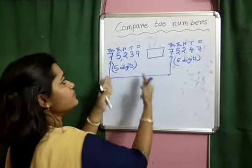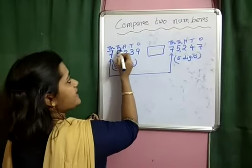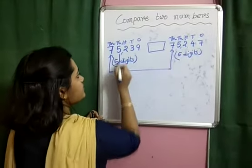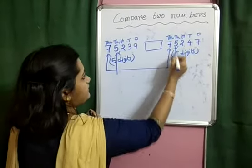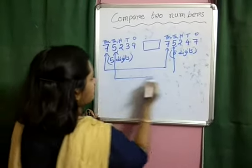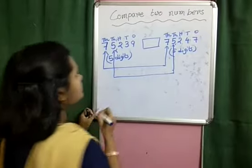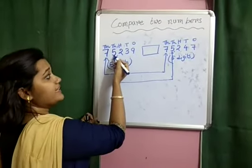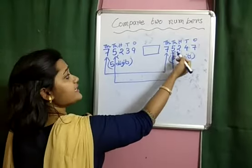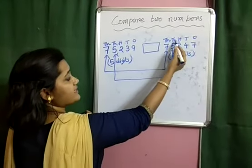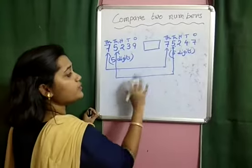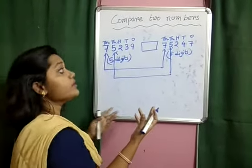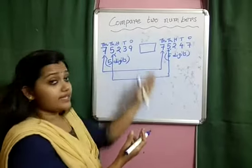Next step: move to the next highest place, which is 1,000. Check that place. Under the 1,000s header, here is 5, and in this case also, under the 1,000s header, the number is 5. So in both cases the digits at the next highest place are the same.